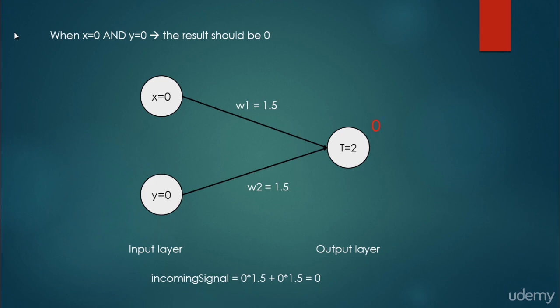The incoming signal is less than 2, so it is not going to fire. Let's consider the situation when x is equal to 1 and y is equal to 0 — the second line in our logical table. We calculate the incoming signal: 1 times 1.5, because 1 is the value of x times w1 which is 1.5, plus 0 times 1.5 for y times w2. That equals 1.5, which is less than the threshold of 2, so it is not going to fire — it produces 0.